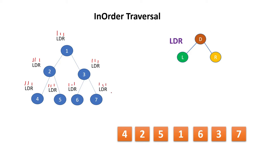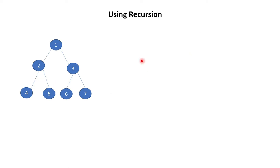Now the question is how we will implement the same thing in programming. For that purpose we can take help of two approaches — one is recursive and another is iterative. So first we will discuss about the recursive approach. In case of inorder traversal, the rule we have to follow is LDR — left side first, then the root node or parent node, then the right side. It is easy to remember also.